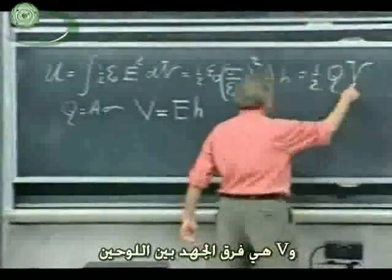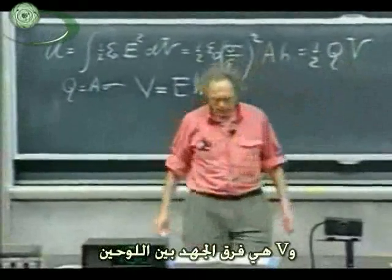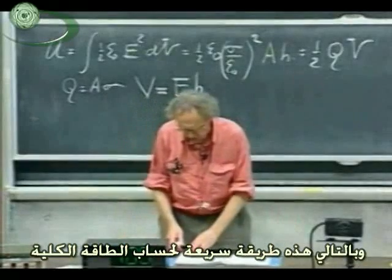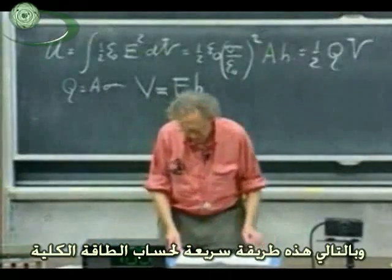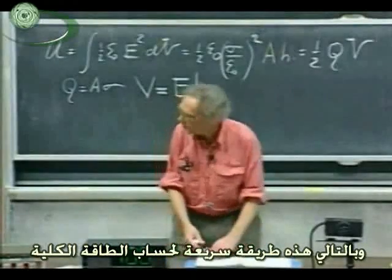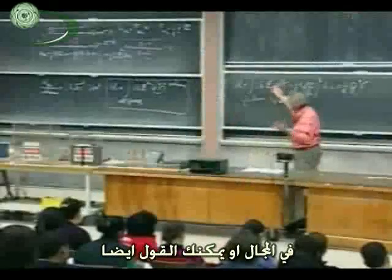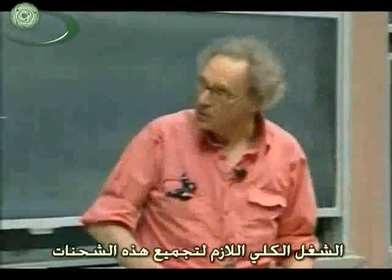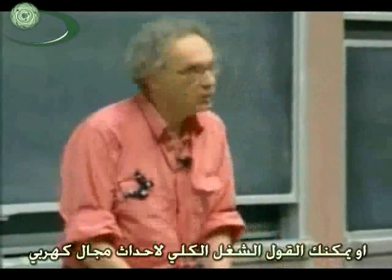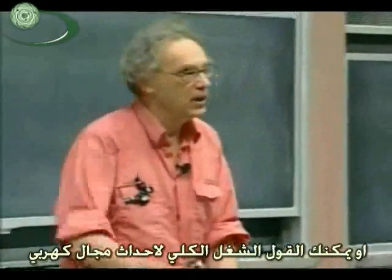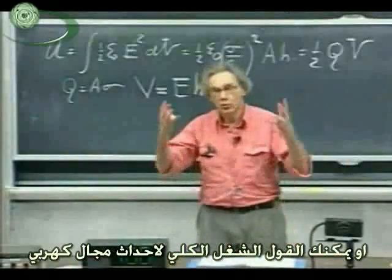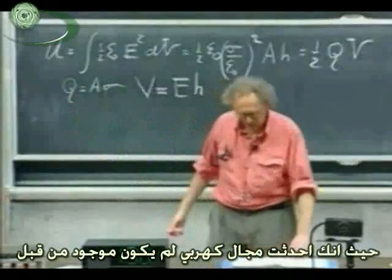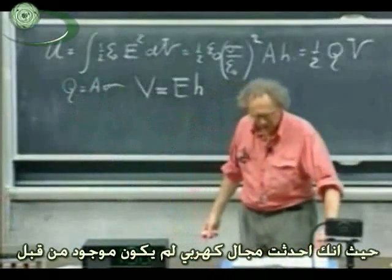V being the potential difference between the plates. This is a rather fast way that you can calculate what the total energy is in the field, or to say the same thing, the total work you have to do to assemble these charges, or to say it differently: the total work you have to do to create electric fields. You have created electric fields that were not there before.